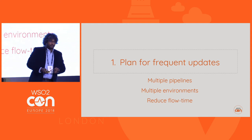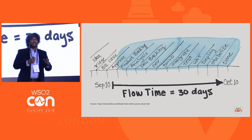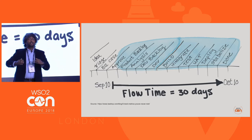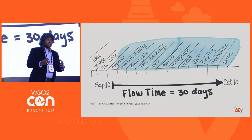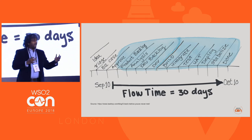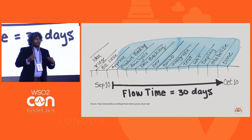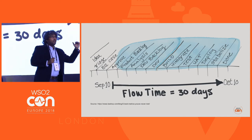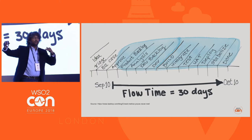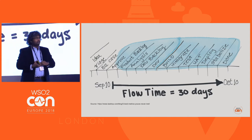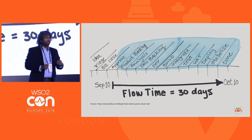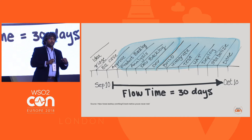So the usual definition of flow time is the time it takes from approving a change to delivering it to the customer or to production — it may take days, or in some cases hours. In the context of pipelines, we can consider flow time as the time it takes when code comes into the pipeline to promote that code into production. The goal should be to reduce this flow time as much as possible, and measuring it will give you a better understanding of how your pipeline performs.